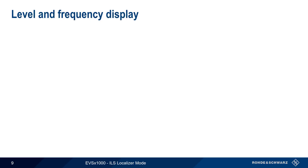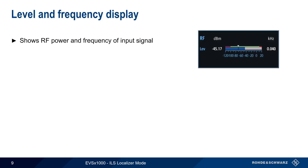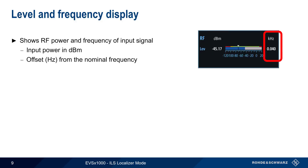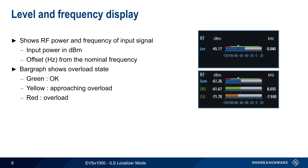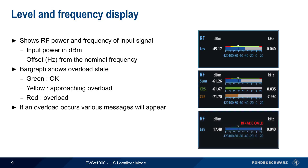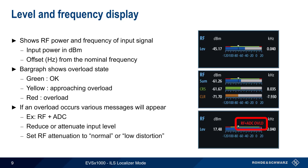The Level and Frequency display shows the power and frequency of the input signal, with power shown as an absolute value in dBm and frequency as an offset in Hz from the nominal or configured localizer frequency. The bar graph shows the overload state: green means no overload, yellow indicates an approaching overload, and red indicates that overload is occurring. Note that in Course and Clearance mode, separate bar graphs are displayed for each signal. If an overload condition does occur, different messages will appear depending on the type of overload — for example, RF and ADC overloads. The solution is to reduce or attenuate the input level by setting RF attenuation to either normal or low distortion.